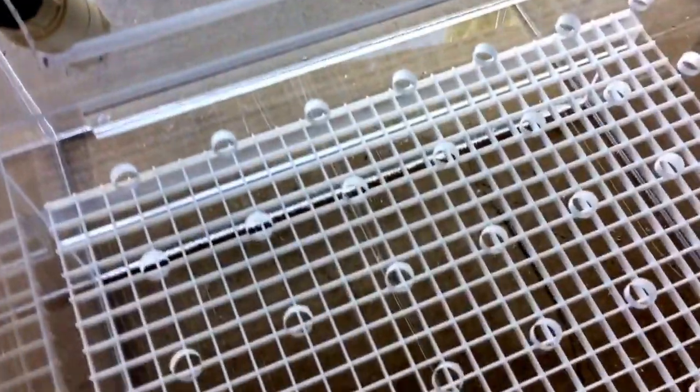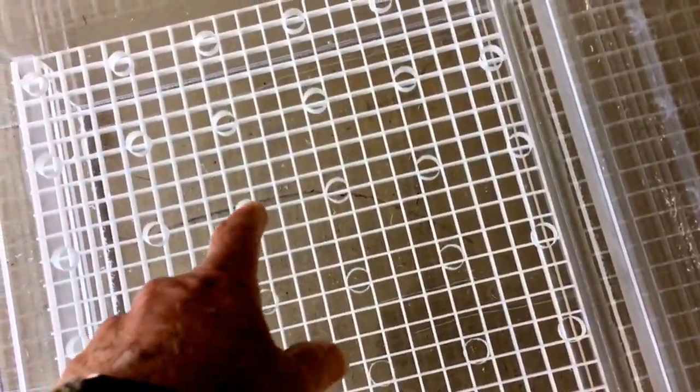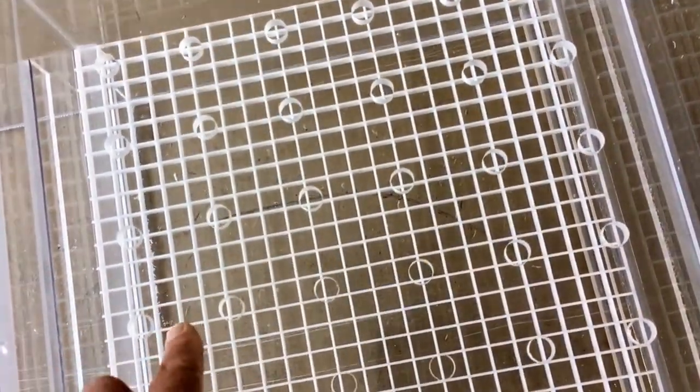So we're getting ready to try this out. I made a top plate here with holes drilled in it. It's like a diffuser. And then I got the egg crate on the bottom, which the filter material will actually be going across.